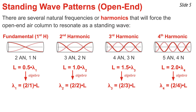I've written each of these equations with a fraction on the right side: 2 over 1, 2 over 2, 2 over 3, and 2 over 4. The denominator of the fraction is simply the harmonic number, and the numerator is always 2. So the general equation is that the wavelength of the nth harmonic, where n is the harmonic number, equals 2 divided by n, multiplied by L. I can use this equation to calculate wavelengths for the various harmonics if I know the length of the air column.